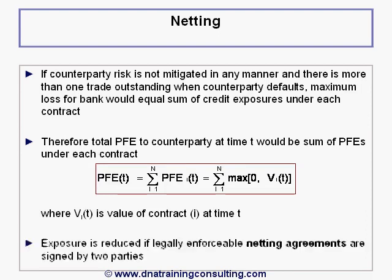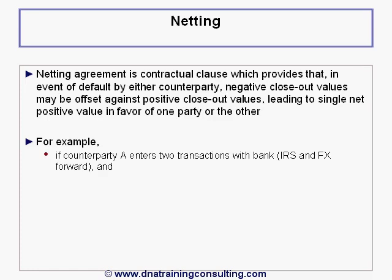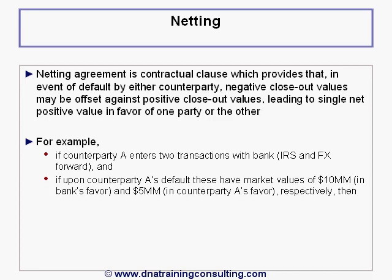This exposure is reduced if legally enforceable netting agreements are signed by the two parties. A netting agreement is a contractual clause which provides that, in the event of default by either counterparty, negative closeout values may be offset against positive closeout values, leading to a single net positive value in favor of one party or the other. For example, if counterparty A enters two transactions with the bank, an IRS and an FX forward, and if upon counterparty A's default these have market values of $10 million in favor of the bank and $5 million in favor of the client,